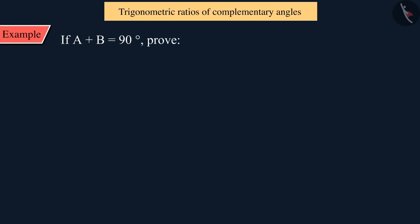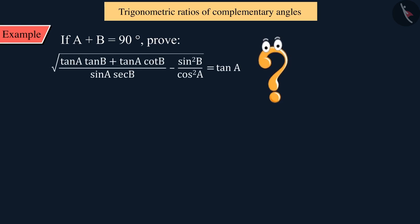If A plus B is equal to 90 degrees, can you prove the following equation?